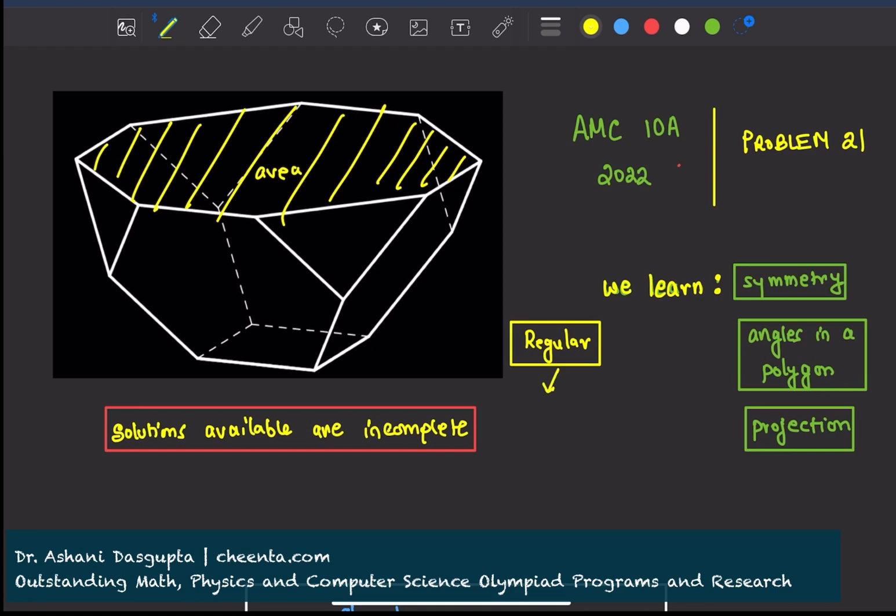Regular means the angles are the same. All angles are the same. In the case of hexagon, they are 120 degrees. Each of these angles are 120 degrees. You can calculate that using the angle formula for a polygon.